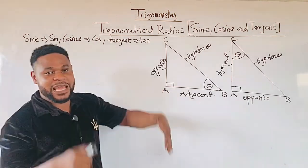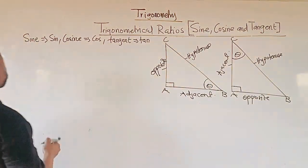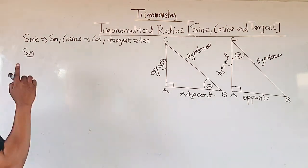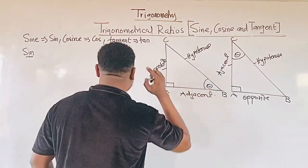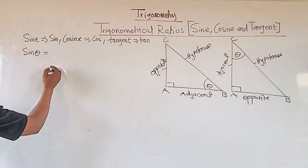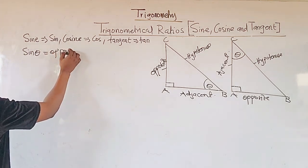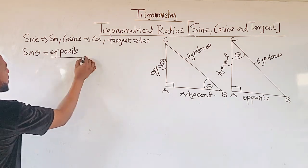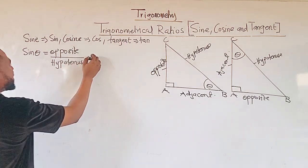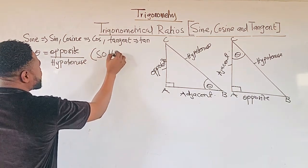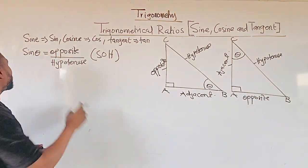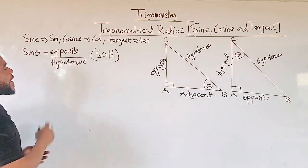Let's take them one by one and relate them to the right angle triangle. First of all, we take our sine, and anytime we write our sine ratio, what must follow should be the angle, all the time. So we say sine theta equal to opposite over hypotenuse. In short, we say SOH — so when we say SOH, you respond: sine theta equals opposite over hypotenuse.